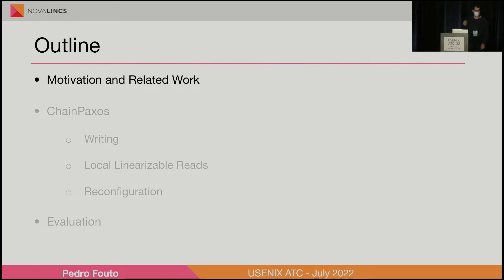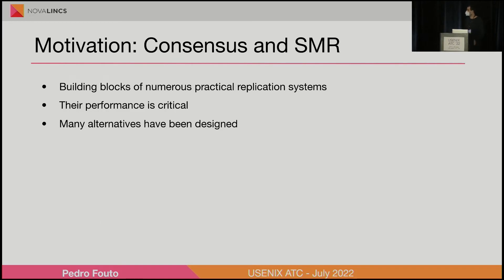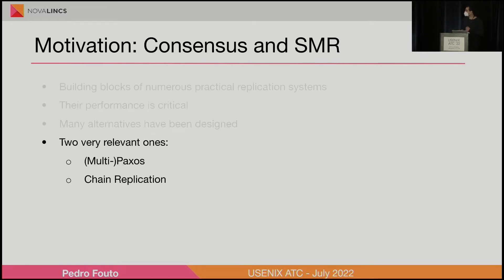Starting with a bit of motivation and context, our work is in the area of consensus and state machine replication, which is the building block of many practical replication systems. Its performance is very critical to the operation of these systems, and that's why many alternatives have been designed and proposed over the years. There are two very relevant ones I want to quickly summarize: MultiPaxos and chain replication.